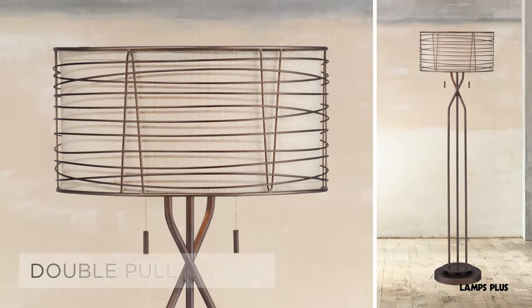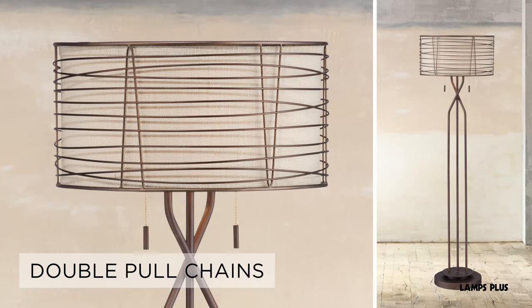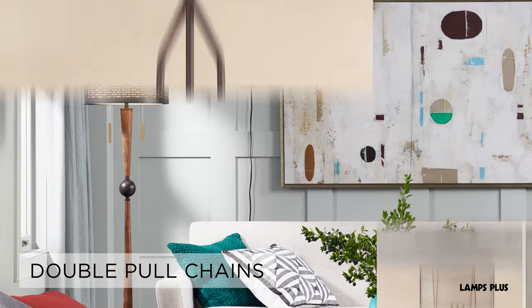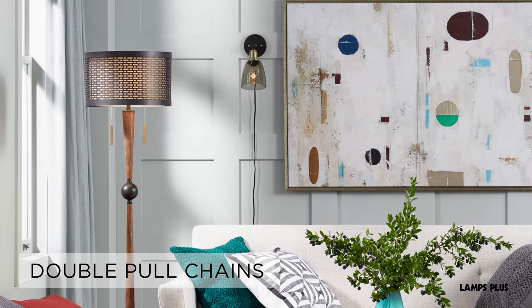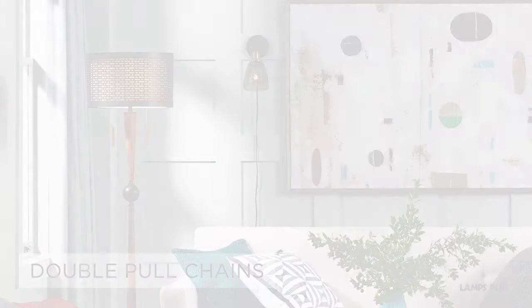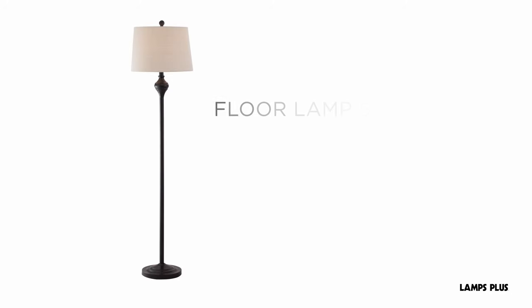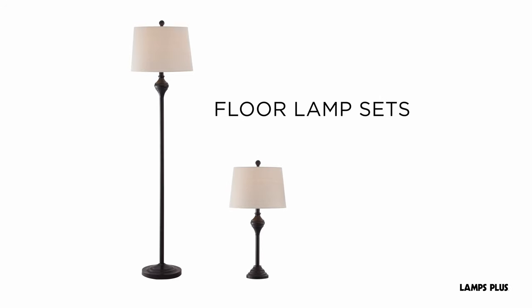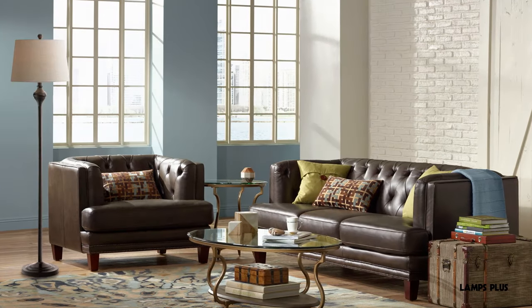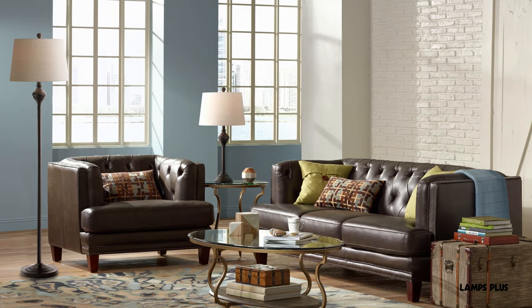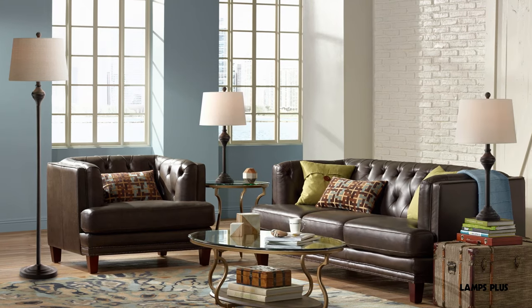For the option of having two levels of light, choose a floor lamp featuring double pull chains. For larger rooms, consider floor lamp sets — they are an easy and quick way to visually unify the space.